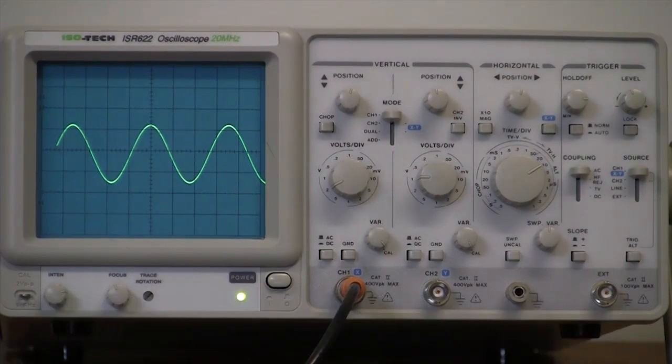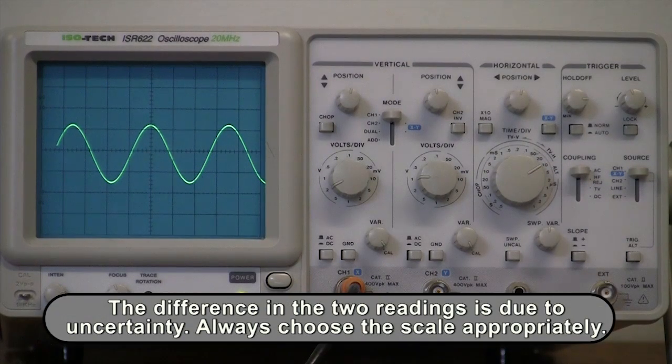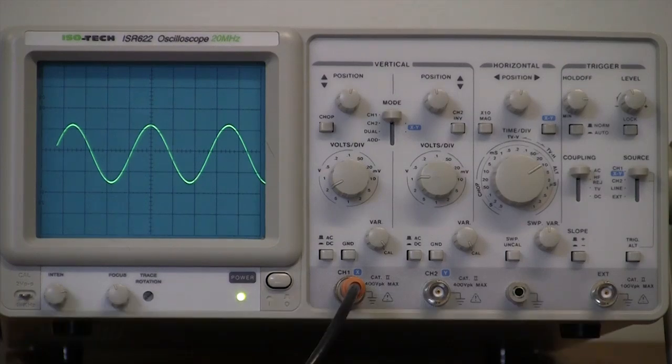The difference in the two readings is due to uncertainty. Always choose the scale appropriately. Make sure that the signal spans as much of the screen as possible, while still allowing you to measure both peaks.